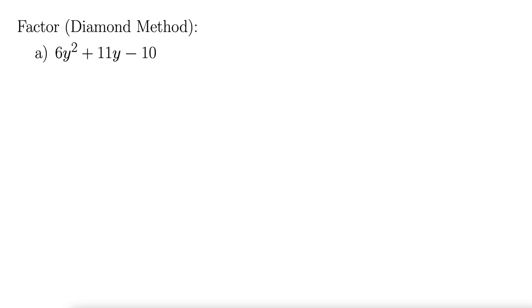This example asks us to factor using the diamond method: 6y squared plus 11y minus 10. So here we have a is 6, b is 11, and c is negative 10.